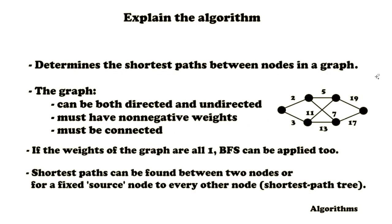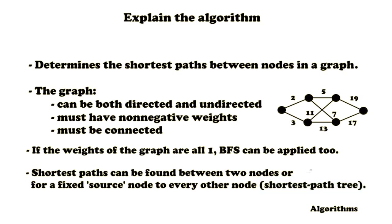Dijkstra's algorithm determines the shortest path between nodes in a graph. The graph to which it is applicable can be both directed and undirected. It must also have non-negative weights and it must be connected. Also, if the weights of the graph are all one, you can just use breadth-first search to get the shortest path. Dijkstra's algorithm can determine the shortest distance between two nodes of a graph, but also if you have a fixed source node, you can determine the shortest path to every other node. Based on this, you can create a shortest path tree, which is basically a tree with the fixed source node at the root, and the edges and nodes that are part of the shortest path connected to it.